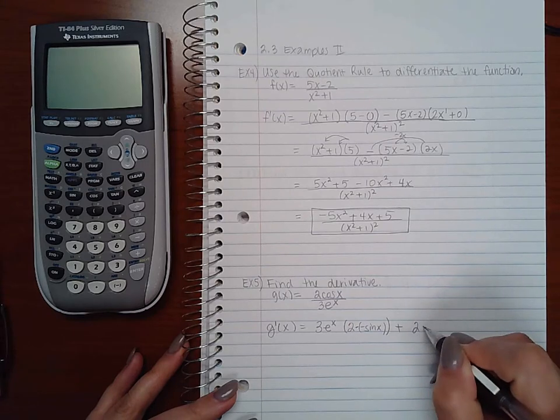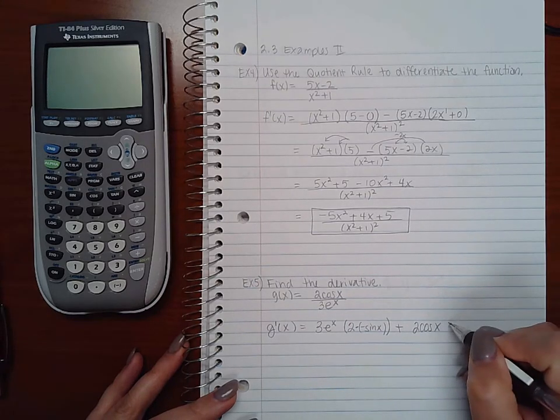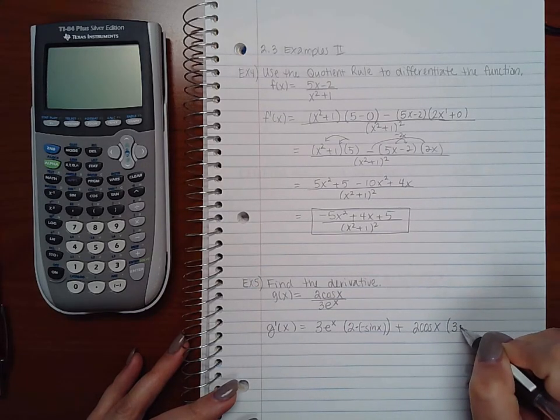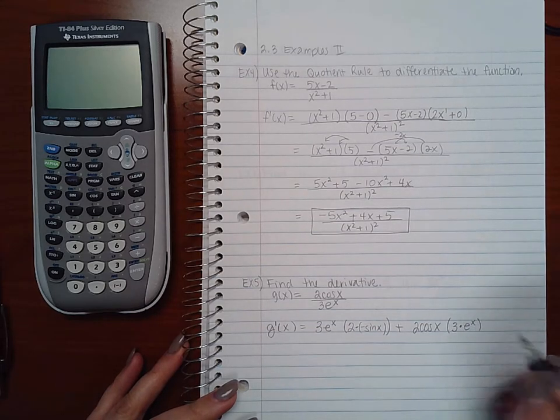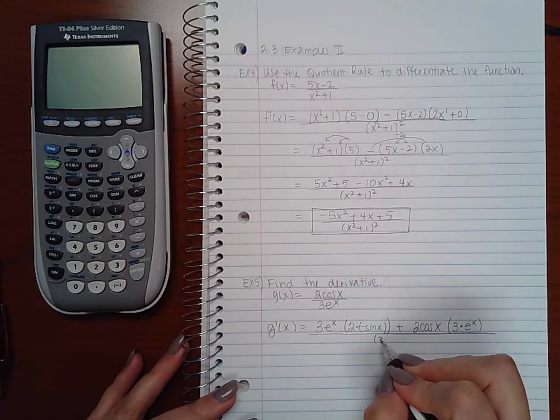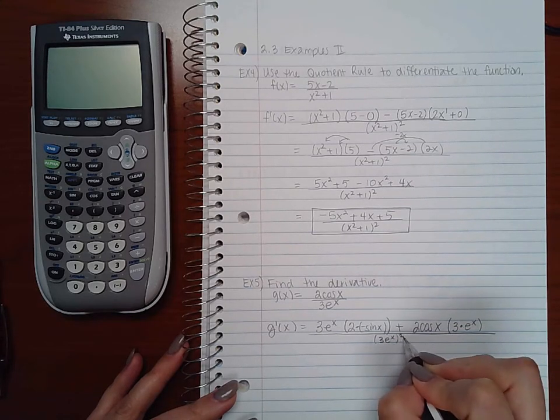Plus high, d low. There's a constant multiplier there. And the derivative of e to the x is e to the x. All over low squared.